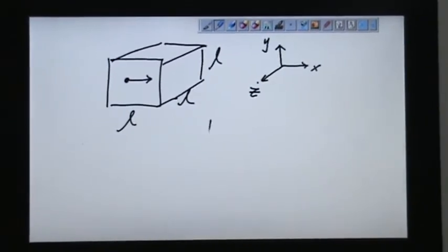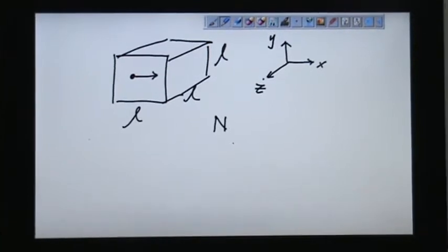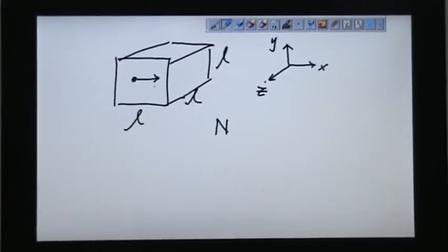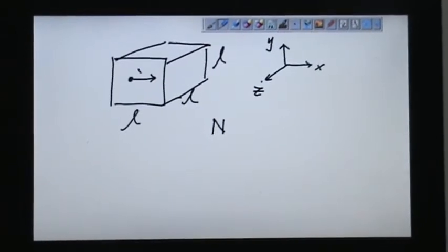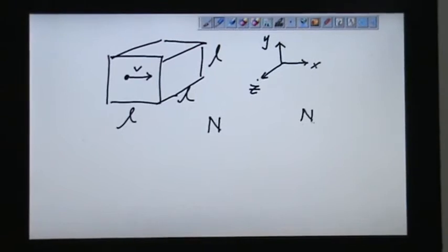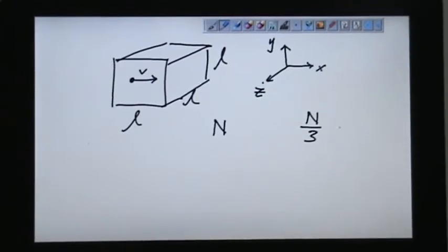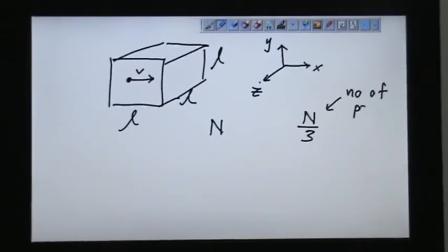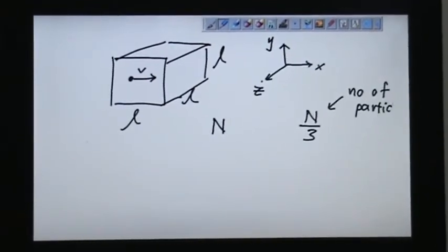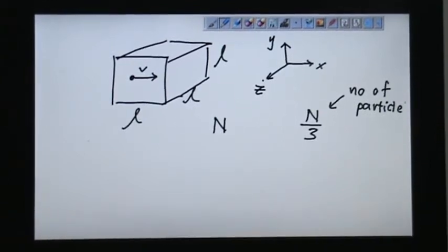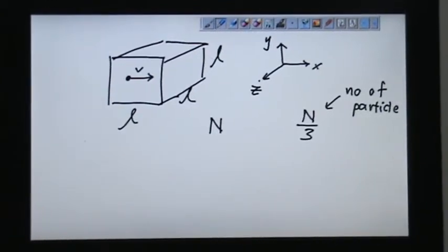Let's consider total number of particles being N. But we want to investigate one direction of this particle moving with certain speed v. So we just consider N over 3 first. This is the number of particles moving in one direction because we resolve all the motion to 3 axes.